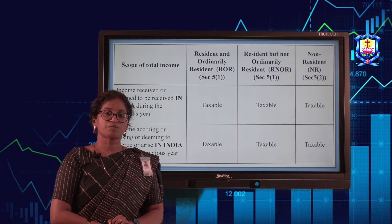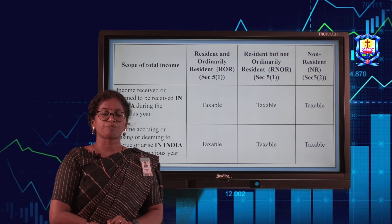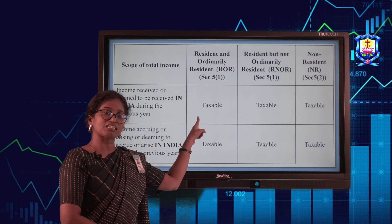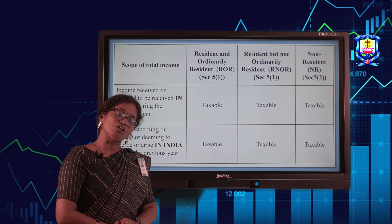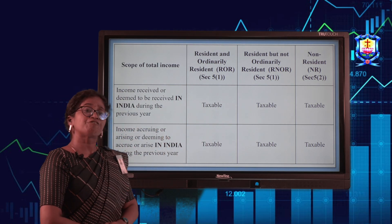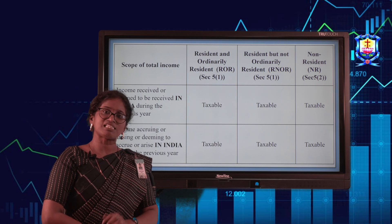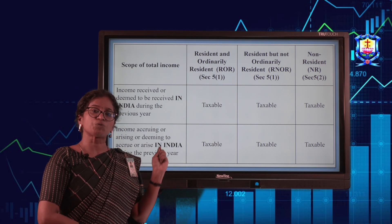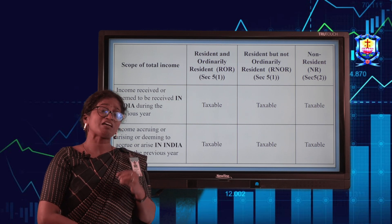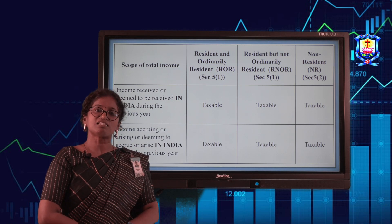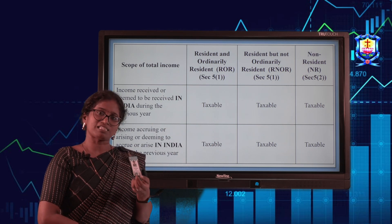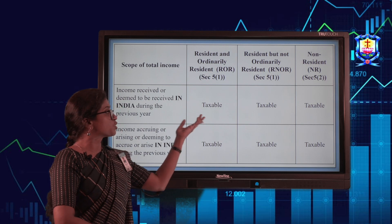We have two types of taxpayers: resident and non-resident. But in the case of individuals and HUF, within the resident category we have resident and ordinarily resident (ROR), resident but not ordinarily resident (RNOR), and non-resident (NR). A person is ROR if they satisfy any one basic condition and both additional conditions; RNOR if they satisfy one basic condition but fail any additional condition; and NR if they fail even the basic condition.